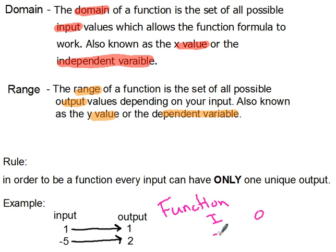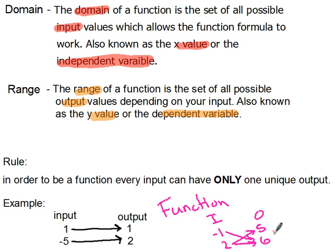Since one only has one output and negative five only has one output, this is a function. Now if I had an input of negative one going to two outputs — say five and six — since that input has two outputs, that would not be a function. An input can only have one output in order to be a function.